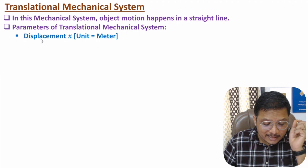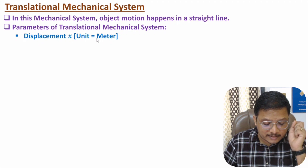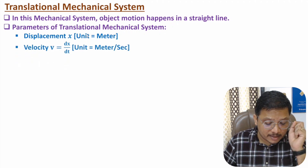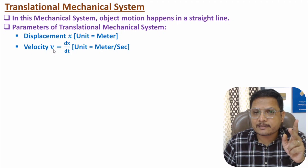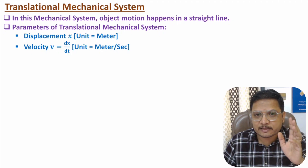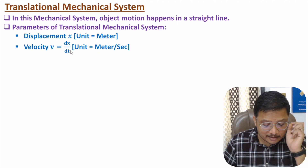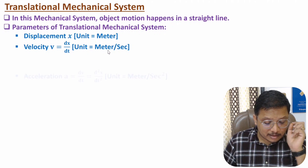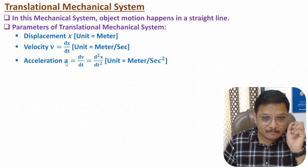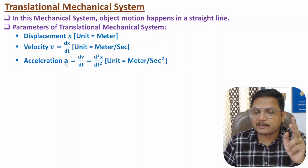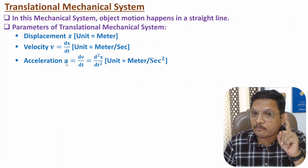I usually denote displacement by X, and the unit of displacement is meter. The second parameter of translational mechanical system is velocity. Velocity is the rate of change of displacement with respect to time, that is dx/dt, and the unit is meter per second.